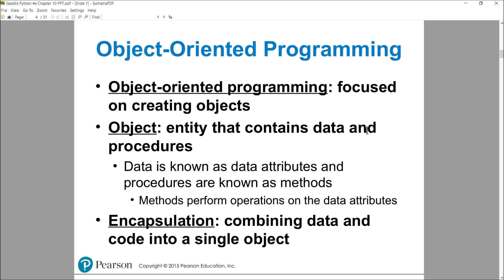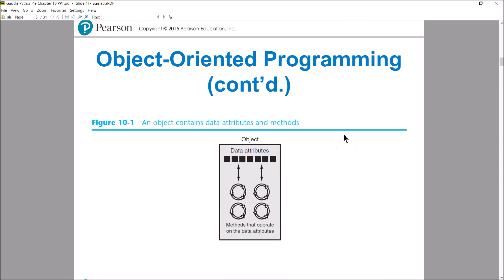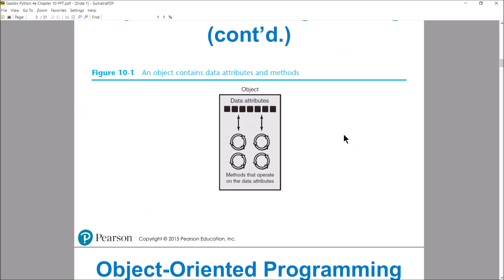The next term is encapsulation. Encapsulation is just the process of combining the data and those functions into a single entity, into a single object. So we're combining data and functions — that's the process of encapsulation. Rather than having functions and variables that are separate from each other, you now have these entities that combine those two things together into an object. An object then becomes something that represents something that you're trying to model in your program.